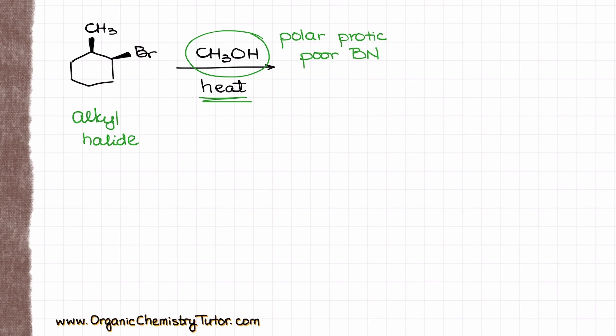In our predictive model, we have the position of the leaving group in the substrate, which can be either primary, secondary, or tertiary. We also have four different categories of reagents that we can react with: nucleophile only, nucleophile and base, base only, and poor everything. If I fill my table real quick, I'm going to get the outcomes like this.